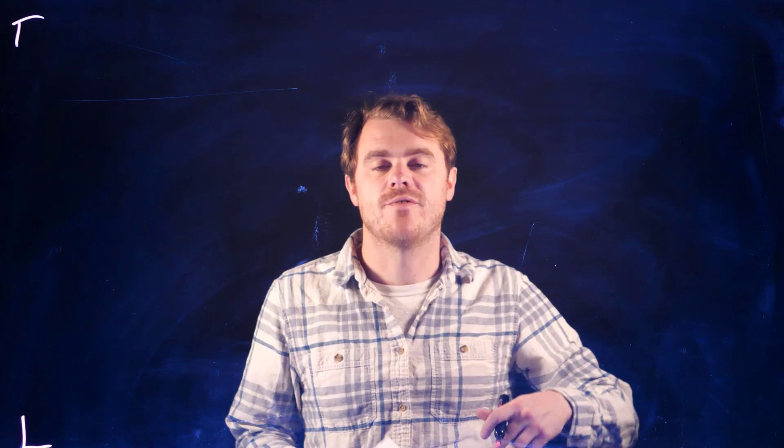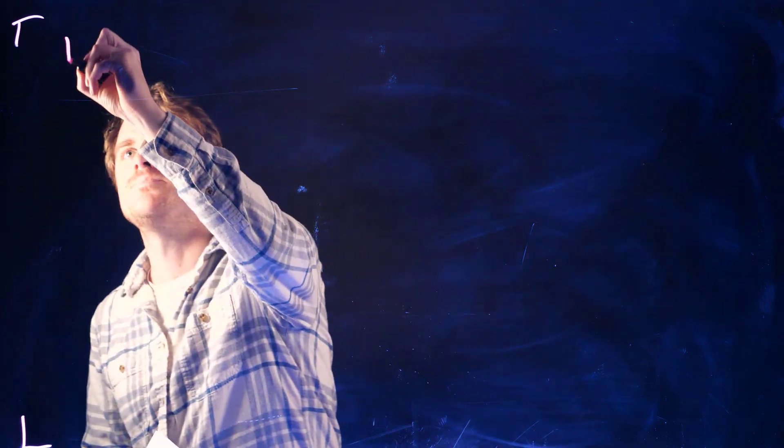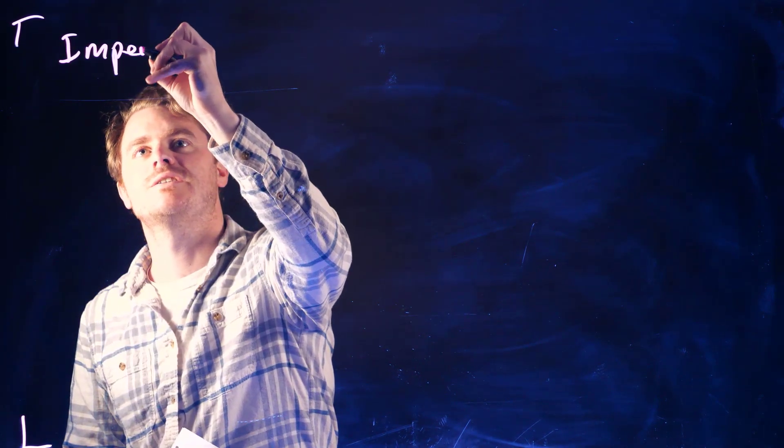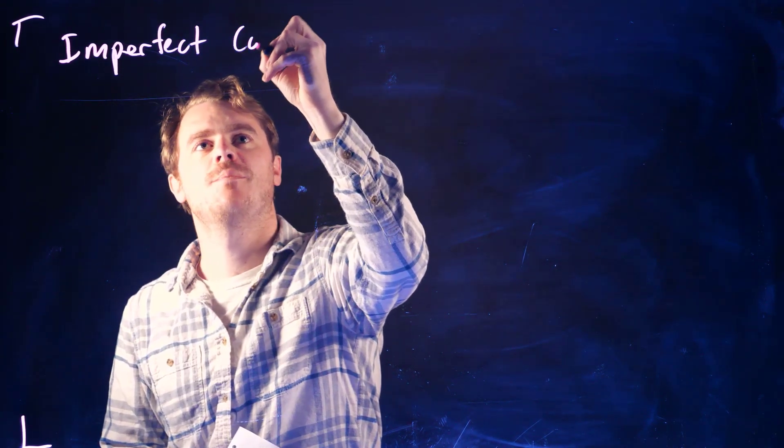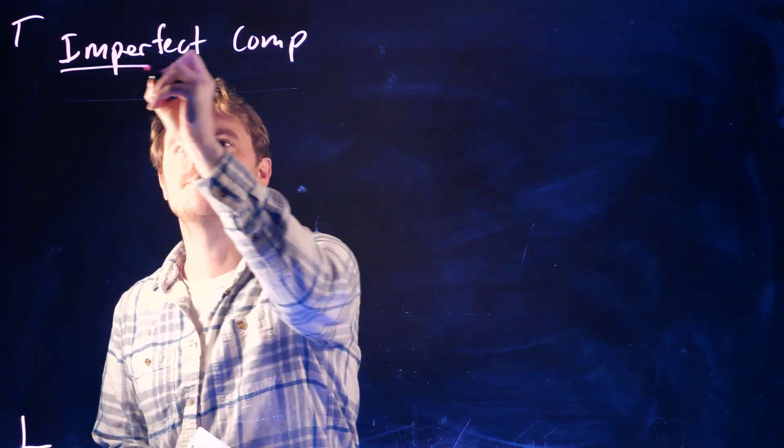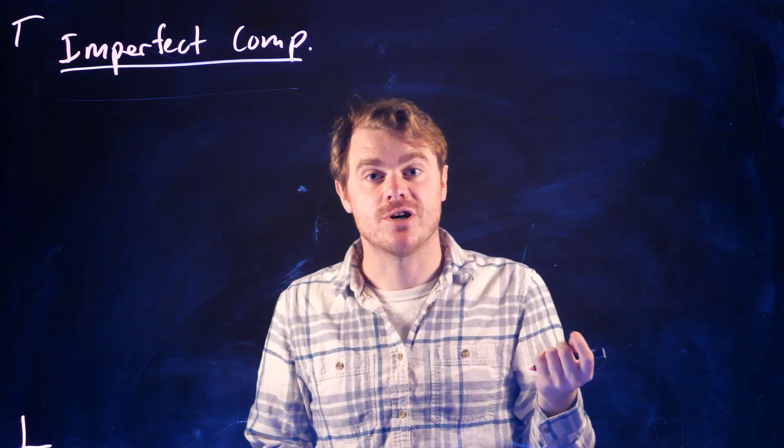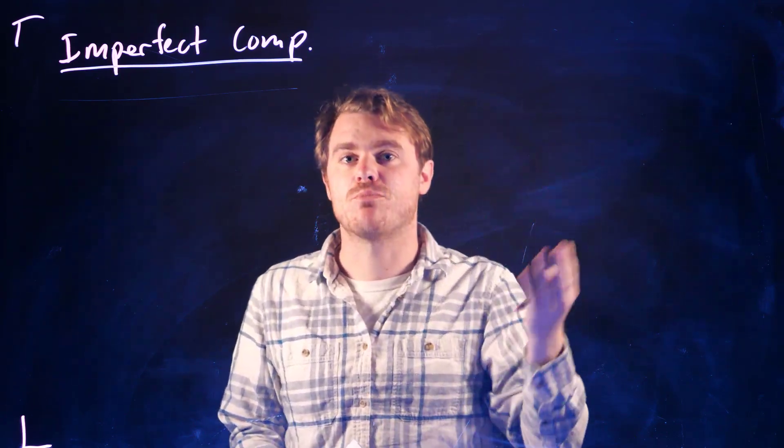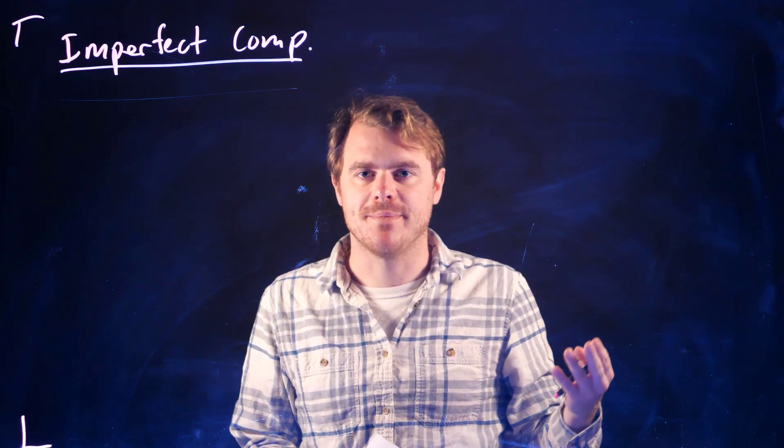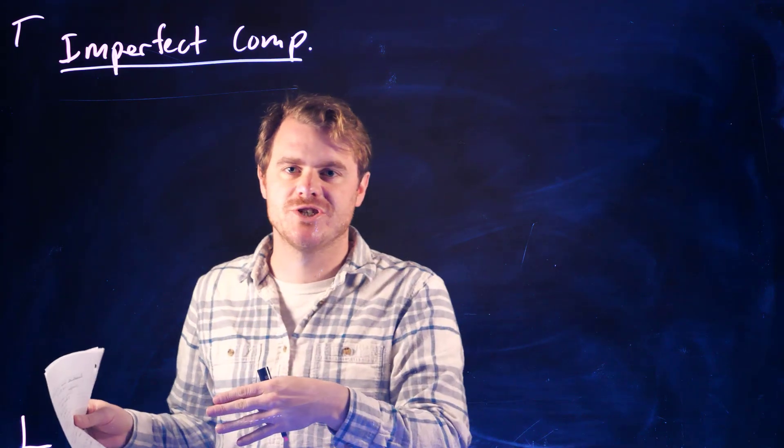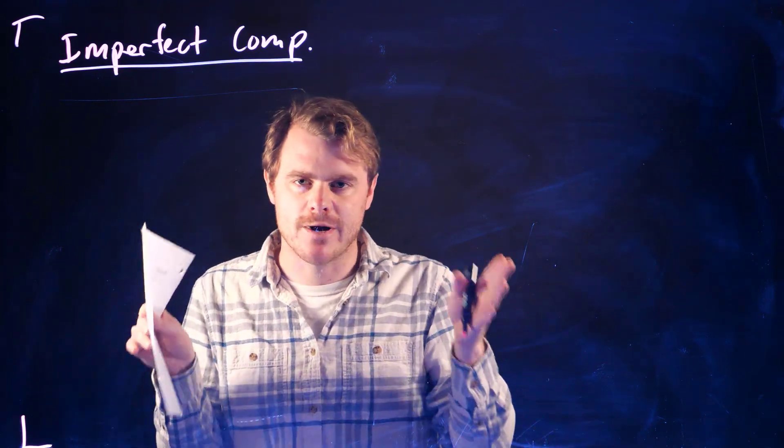In this learning module, we're going to cover imperfect competition. In particular, we're going to cover two separate market structures under this umbrella category of imperfect competition. So it's not perfect competition, it's not monopoly, it's somewhere in between.